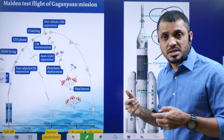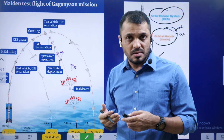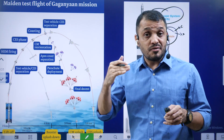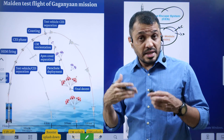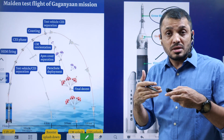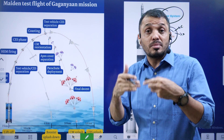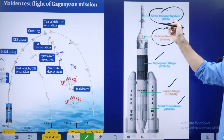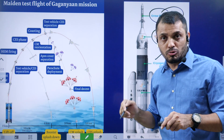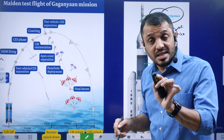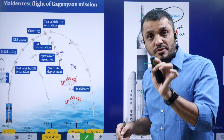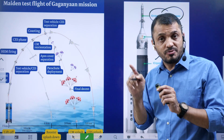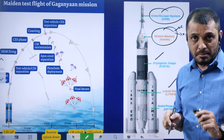The orbital module includes the crew module as well as the service module, and on top is the crew escape system. What is this crew escape system? In case there is an emergency - if they find any faults in the launch after it has started - at any point of time, if astronauts want to abort the system and come out of the launching vehicle, they can activate the crew escape system and come back to the ocean. Today, we tested the crew escape system without crew. That is today's main goal.